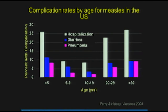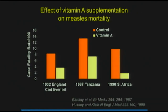Sometimes it's thought that all these complications and deaths are only occurring elsewhere, in Africa, etc. It's true the mortality rates are much higher in developing countries, primarily because of access to medical treatment for those secondary infections. But this is a compilation of complications occurring in the United States. The white bars are hospitalizations across different ages — the youngest and oldest individuals are most likely to develop complications requiring hospitalization. Diarrhea, pneumonia, and deaths do occur in the US and Europe as well as in developing countries.